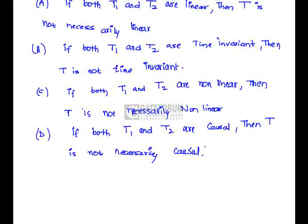there is a possibility of getting a linear system because of cascading effects. Hence this statement is true. Whereas option D: If both T1 and T2 are causal, then T is not necessarily causal.